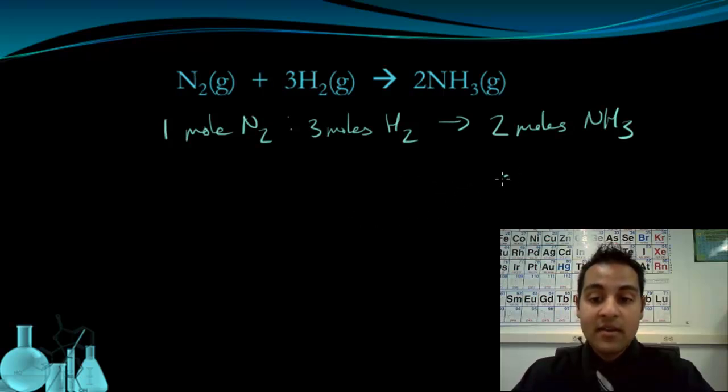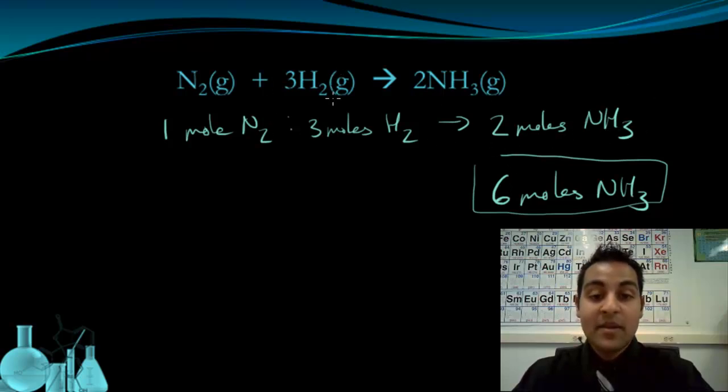If I want to make six moles of ammonia, this is my goal. That's three times as much as what this equation tells us we'll make. That means I need three times as much for the ingredients or the reactants. So instead of needing three moles of hydrogen, I will need nine moles of H2. And instead of needing one mole of nitrogen, I'll need three times that or three moles of nitrogen.